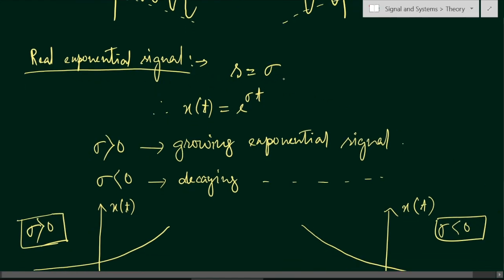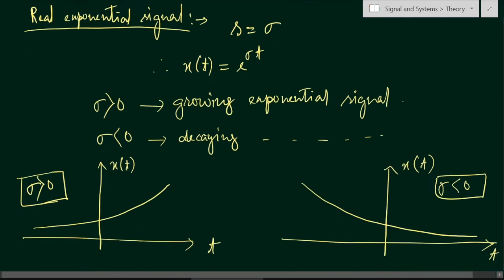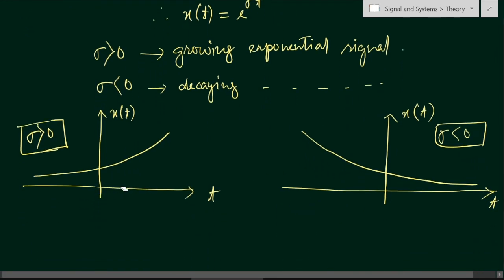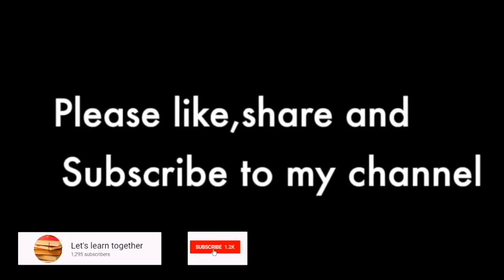In this video we have seen the complex exponential signal, its property of being periodic with period T₀ = 2π/ω₀, the general complex exponential signal, the growing and decaying exponential signals, and the real exponential signal. Thank you for watching — please put any questions in the comment section below, and like, share, and subscribe.